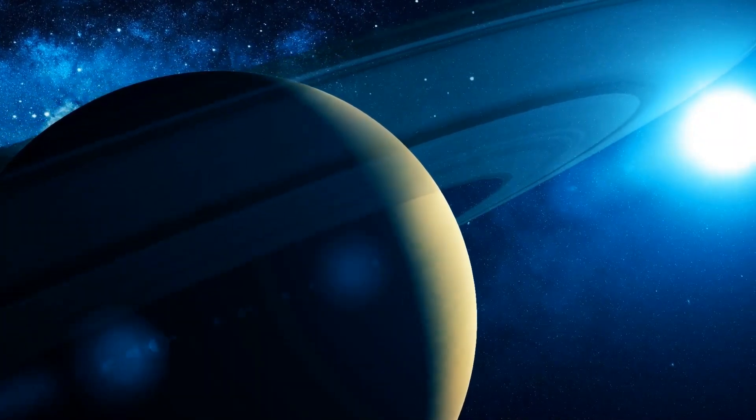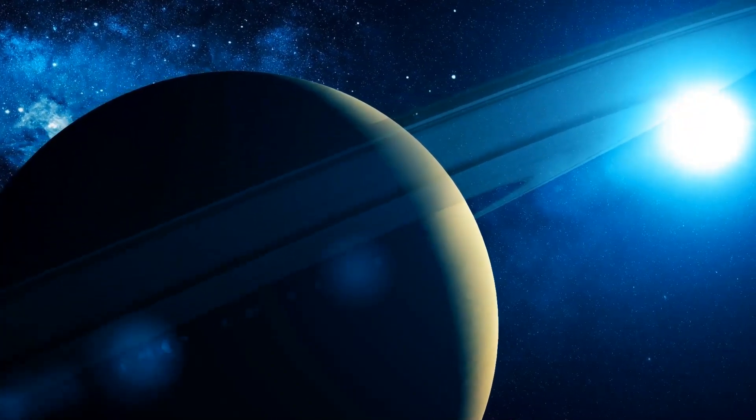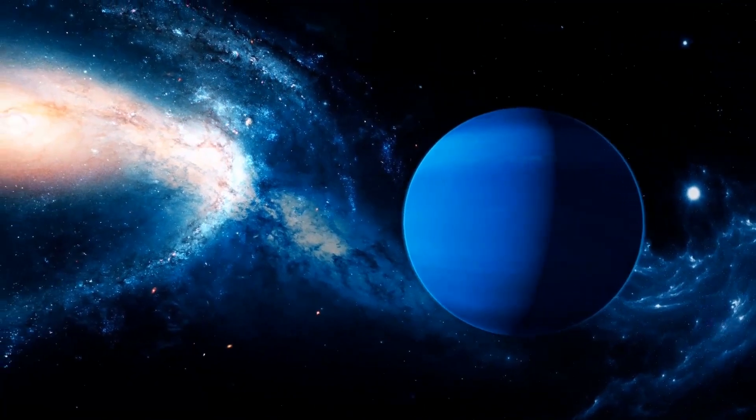At first, the mission was quite simple. Voyager 1 had to study the planetary systems of Jupiter and Saturn, and Voyager 2 had to study Uranus and Neptune.